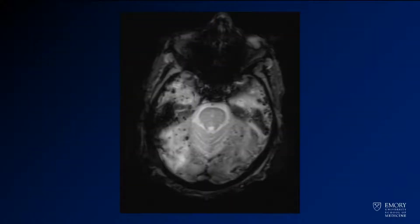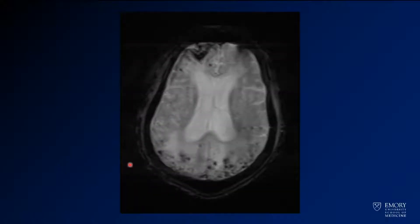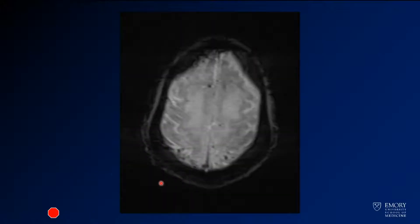Now we start looking at gradient imaging and we start to see a number of abnormalities — numerous little punctate areas of susceptibility. As you go through multiple levels, you're going to see many of these peripherally located areas of susceptibility. Here you see greater susceptibility in an area where there's probably more acute hemorrhage than we saw on the CT. As you come higher, you just see more of the same, with multiple cortical-based areas of susceptibility.